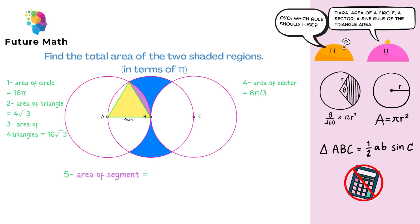Fifth step is to find the area of one segment, which is the area of a sector minus the area of a triangle, so we do 8 pi over 3 minus 4 root 3. Just keep it like this.